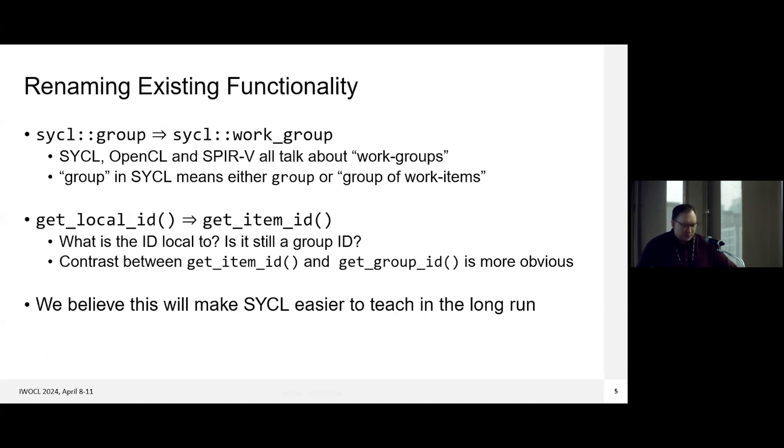Also, based on feedback, we've run into issues where a lot of times developers don't realize the get local ID identifies an item. And so there's questions about what is the ID local to? Is it still a group ID? So if we renamed that to get item ID, we think that the contrast between that and get group ID would be more obvious. And we think if we could make these changes, it would make SYCL easier to teach in the long run. So for the rest of these slides, we'll try to use these hypothetical new names just to keep things simpler.